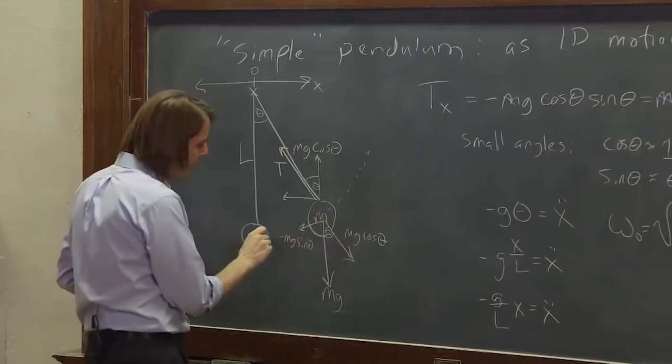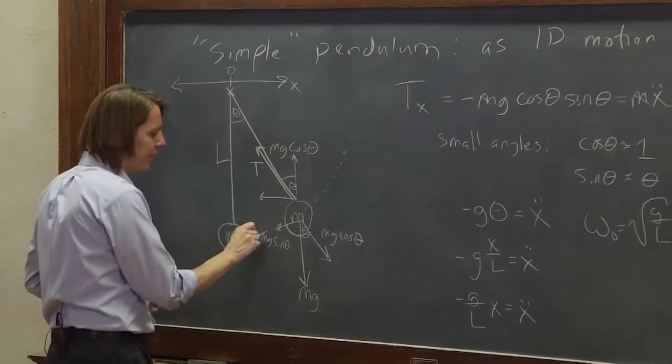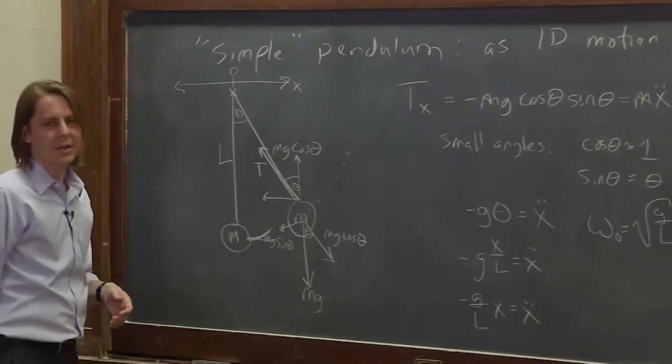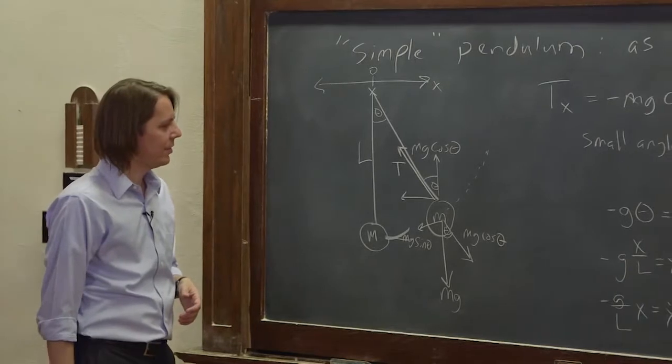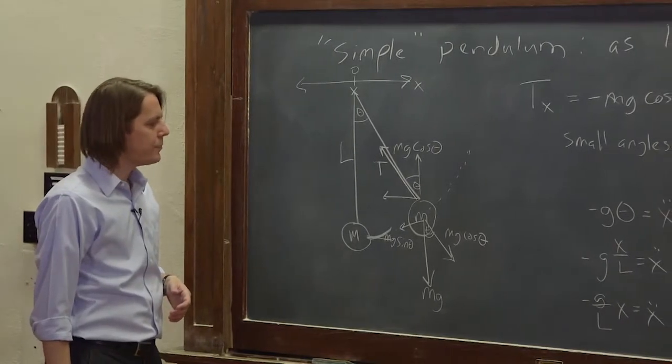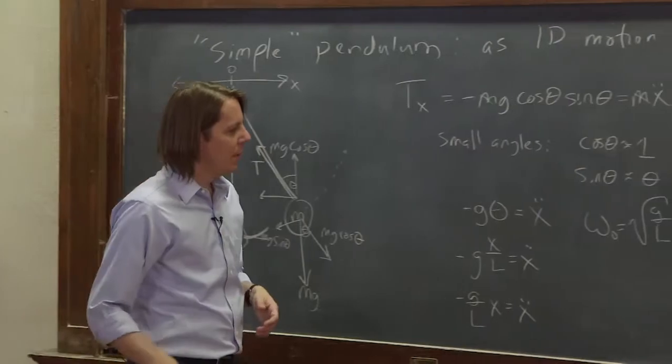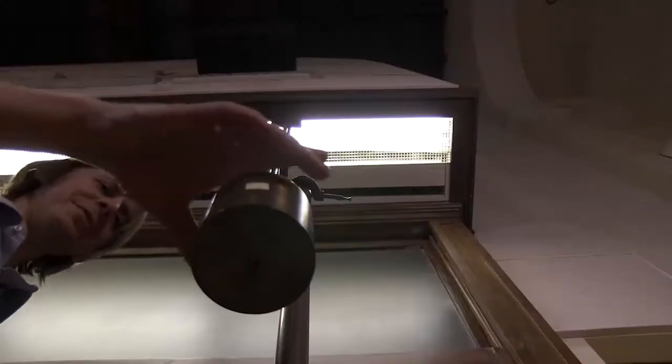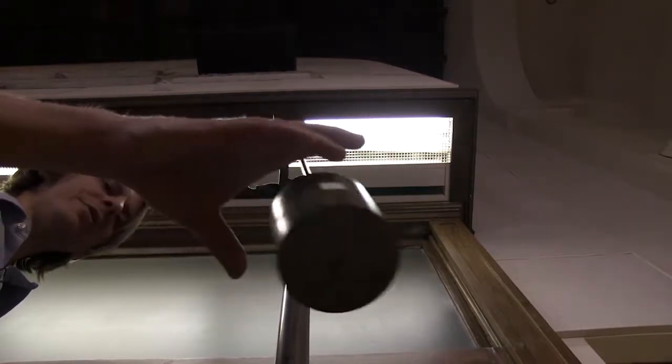So we're taking this arc length and approximating it as a distance theta. So all those are in there. So it's just another way to look at it, a more explicit x-axis derivation with lots of approximations. Now let's see if it's correct.